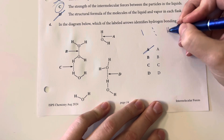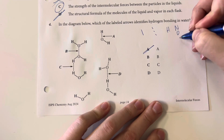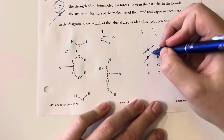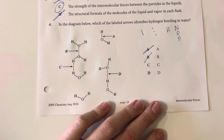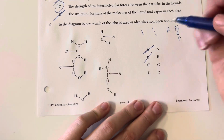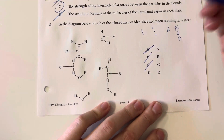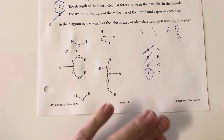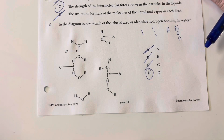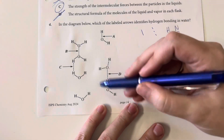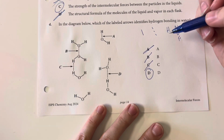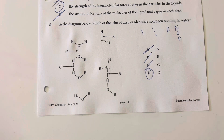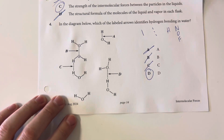Hydrogen bonds must be between hydrogen and either nitrogen, oxygen, or fluorine. Option B is between an oxygen and an oxygen, so hydrogen is not bonded at all — hydrogen cannot hydrogen bond with itself. Hydrogen can hydrogen bond with an oxygen though, so D is going to be my choice, because this is the only temporary bond shown that is between hydrogen and one of the three elements it can hydrogen bond with.